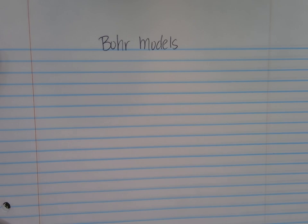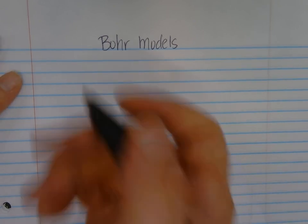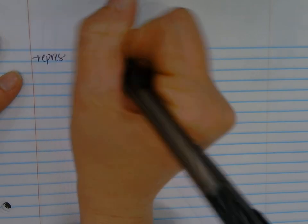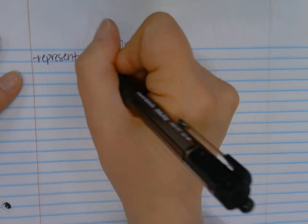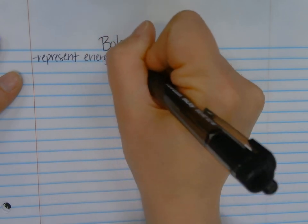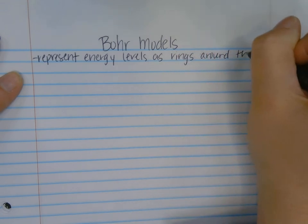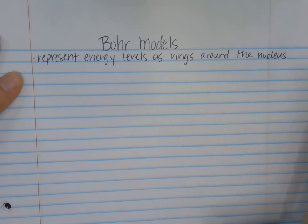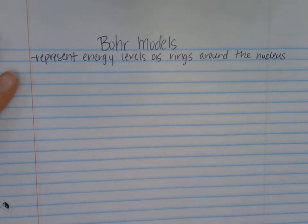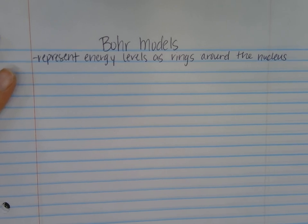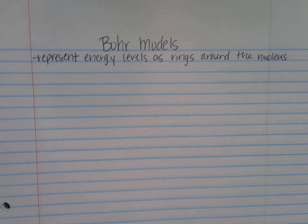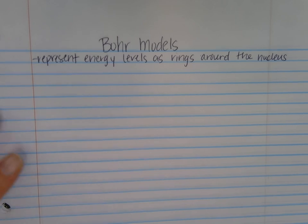The first thing to recognize with Bohr models is that we represent energy levels as rings around the nucleus. During electron configuration, this was the big number in front — the 1, the 2, the 3, the 4. That entire energy level with all of those orbitals is represented by one singular ring around the nucleus in this model. So let's do an example.